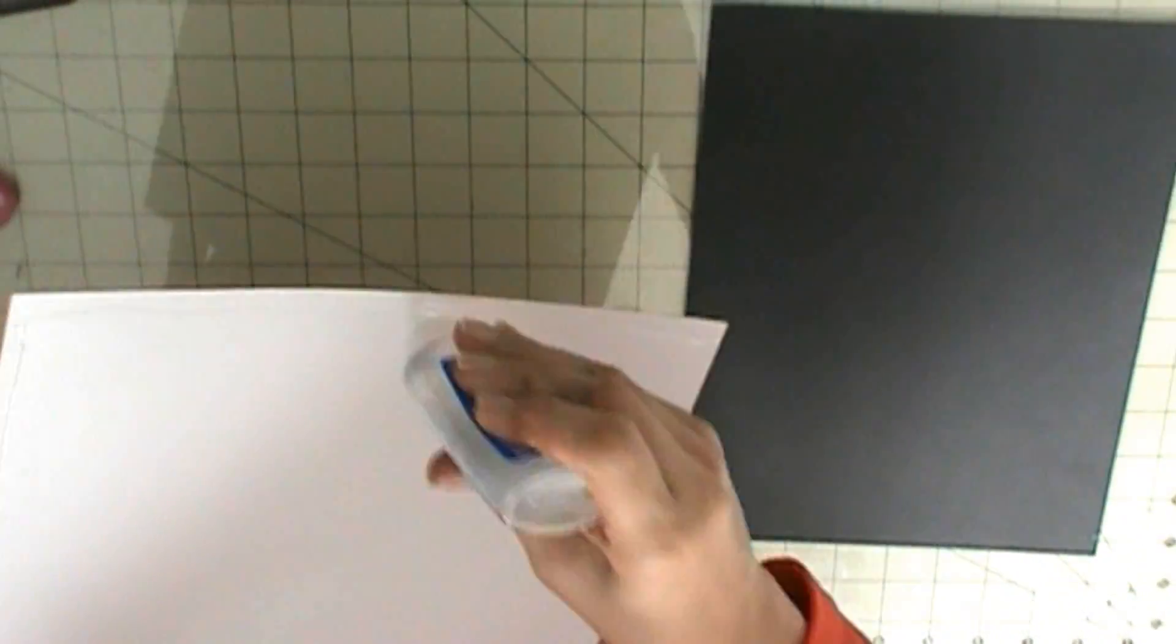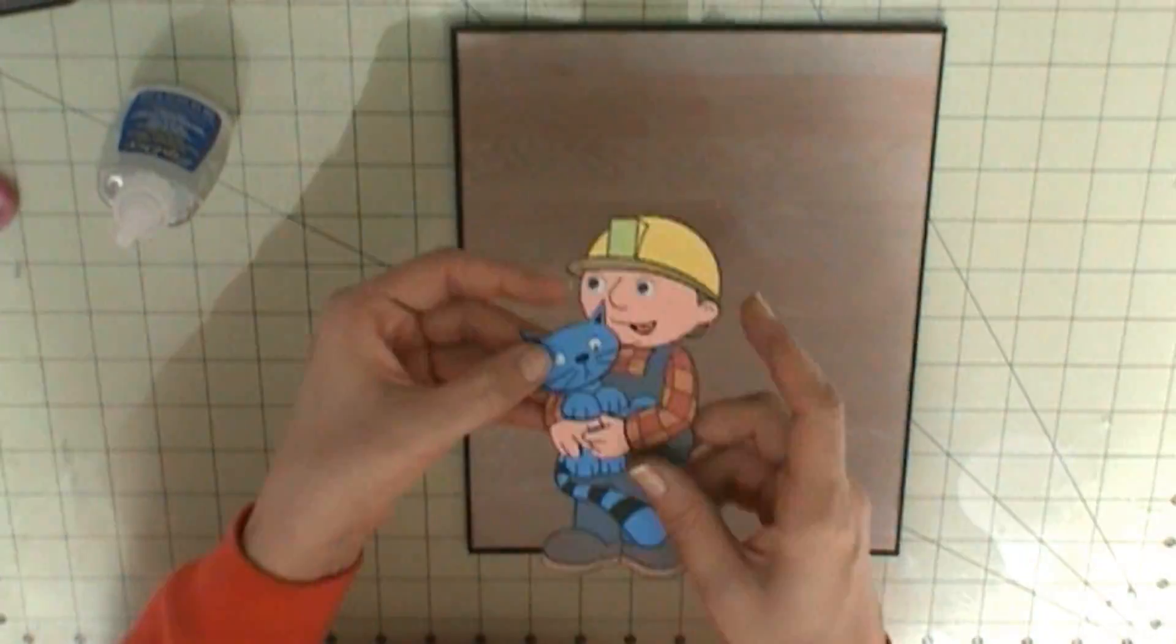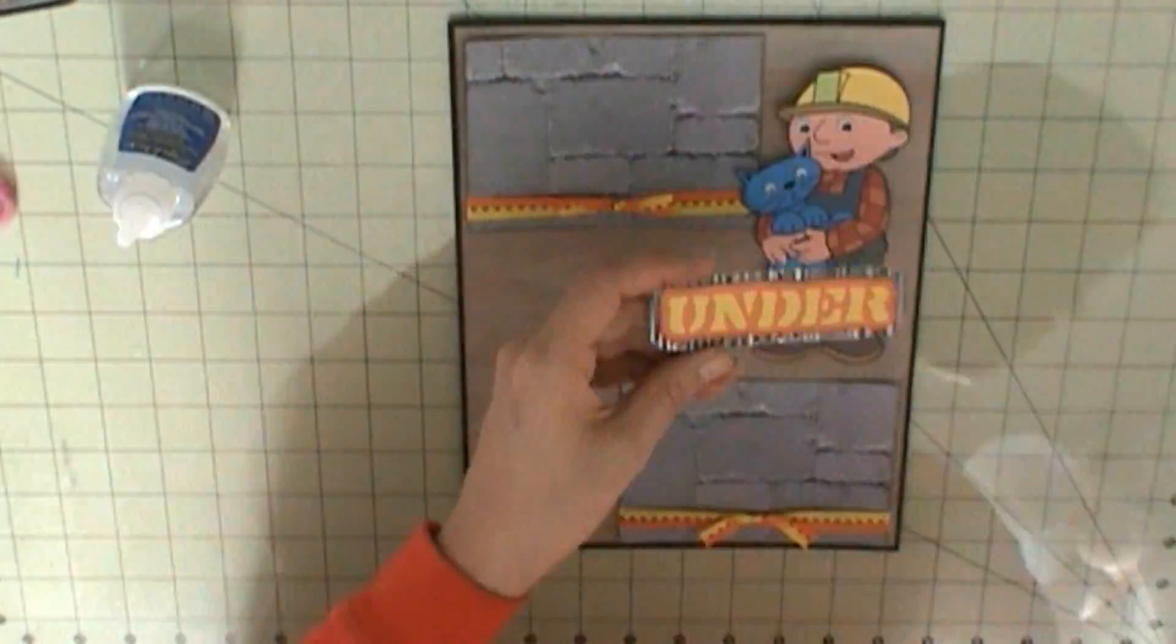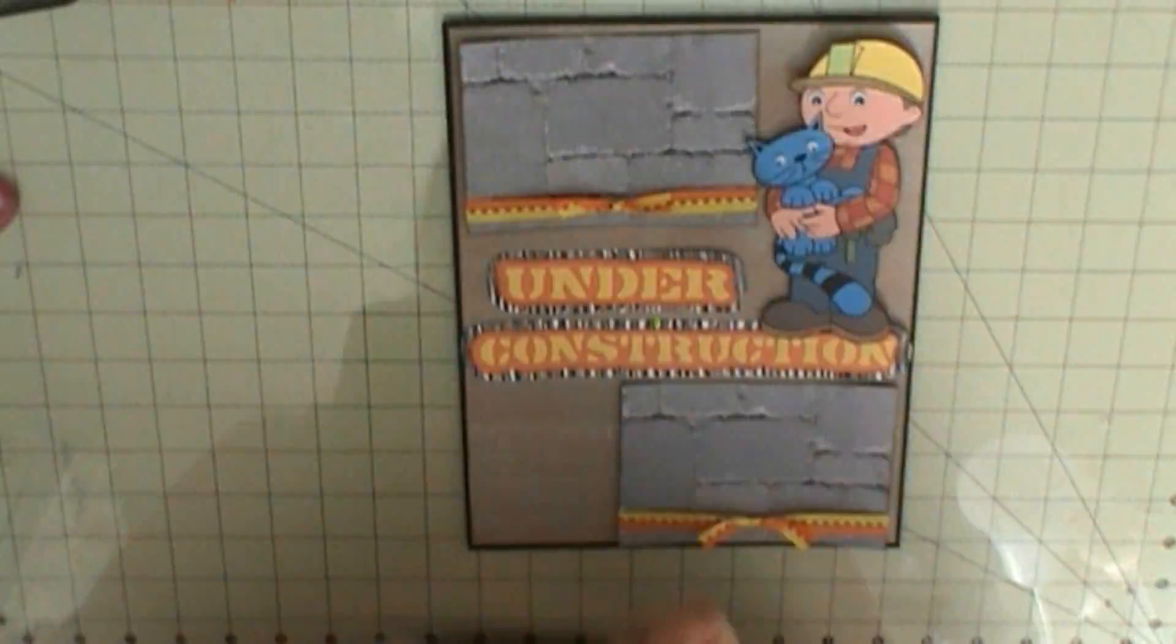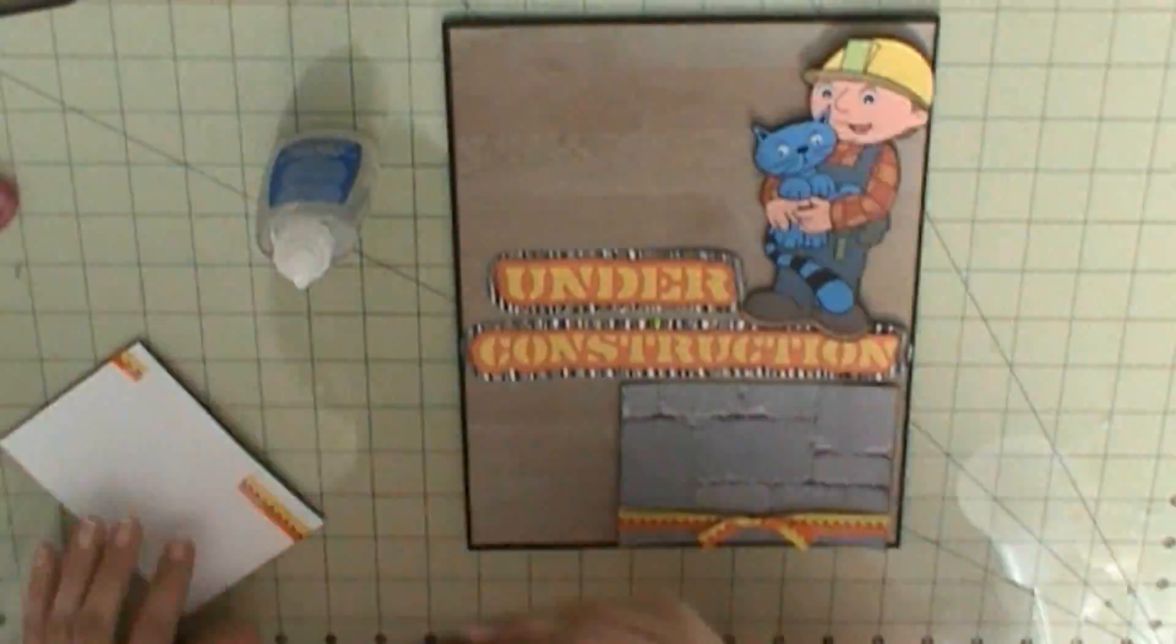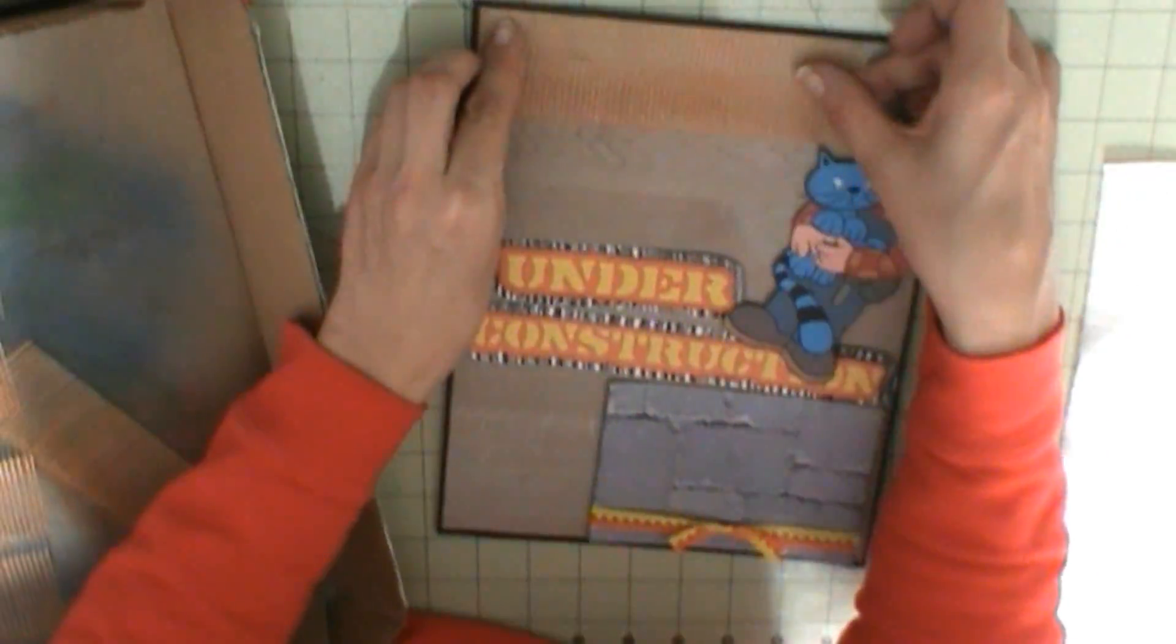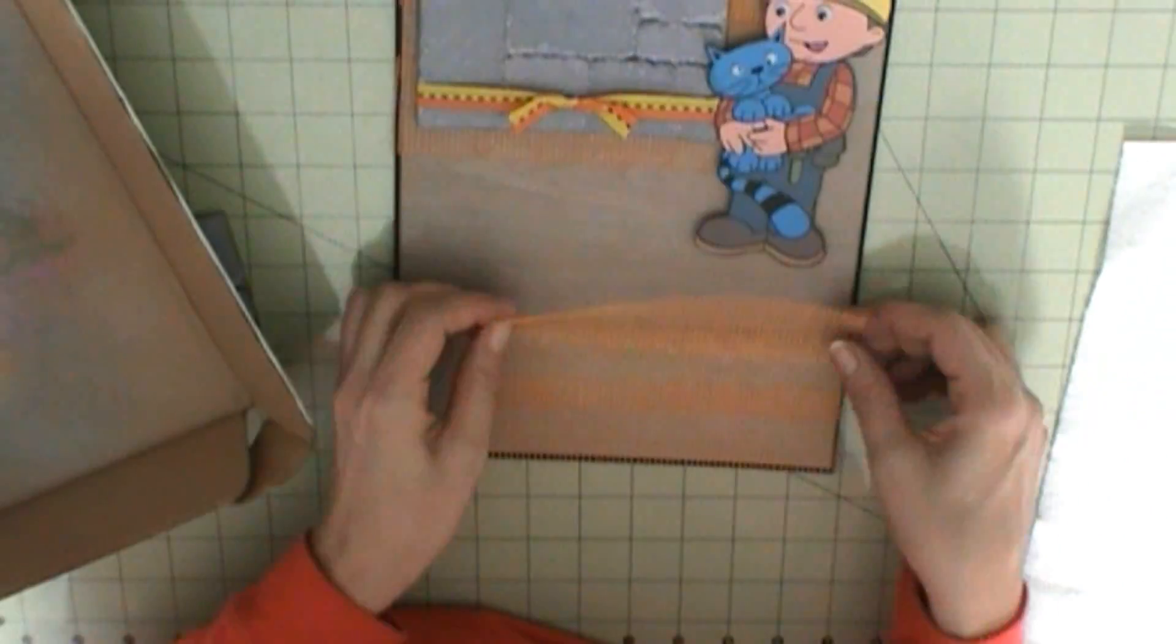All right. So my base page is going to be the black cardstock. And I did a print and cut of a wood. It kind of looks like a wood grain type paper, like wood flooring. And the photo mat looks like brick. And this is all done using the pattern fill on the Silhouette Design Edition.